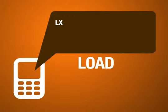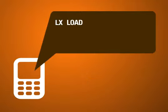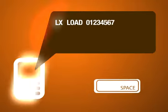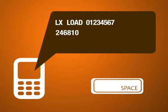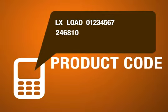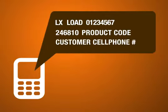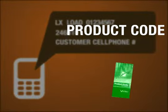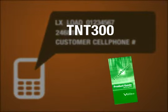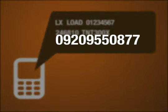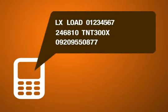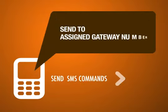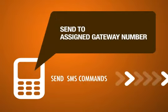To buy or sell load, just type: LX, Load, Your ID number, Your PIK, Product Code, Customer's cell phone number. Product codes can be found on your product guide or price list brochures. Make sure that all the information you entered are correct, particularly the product code and the customer's cell phone number. Then send the SMS command to your assigned gateway.